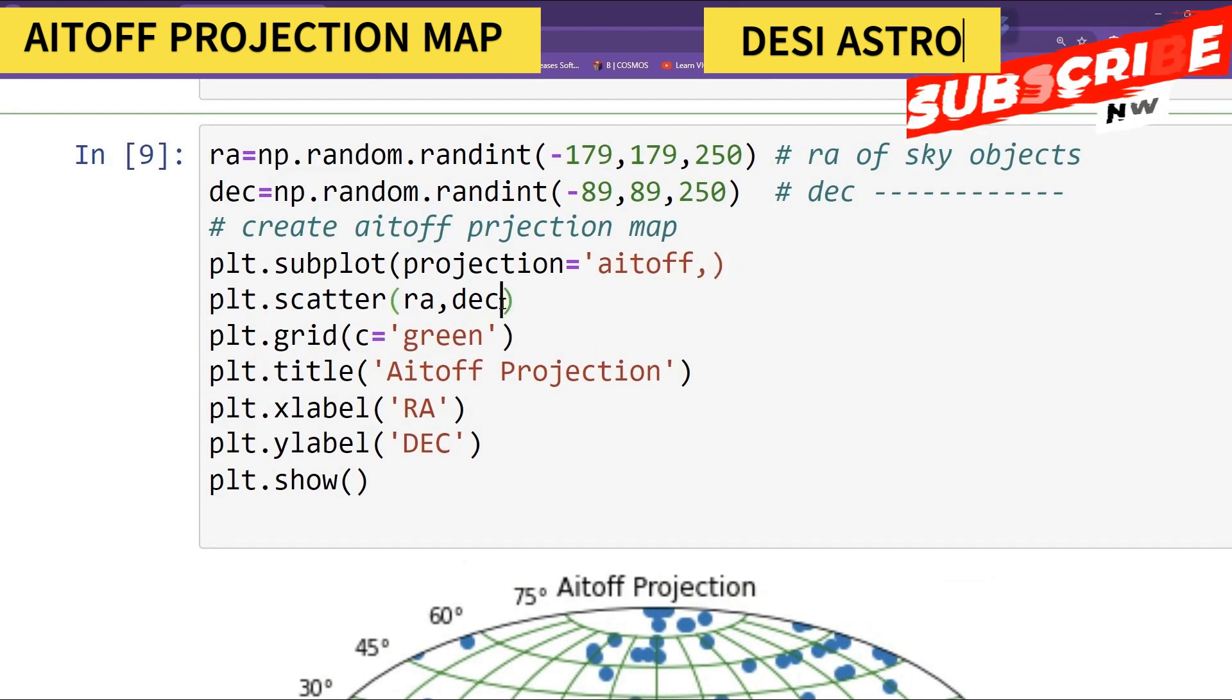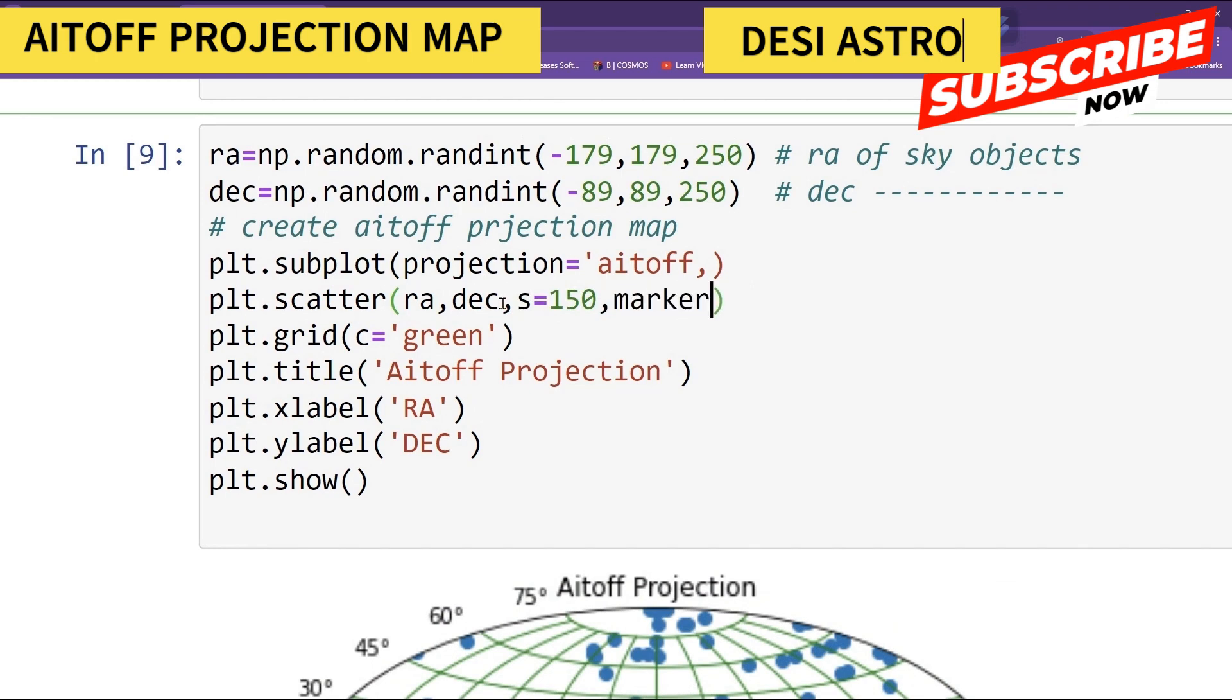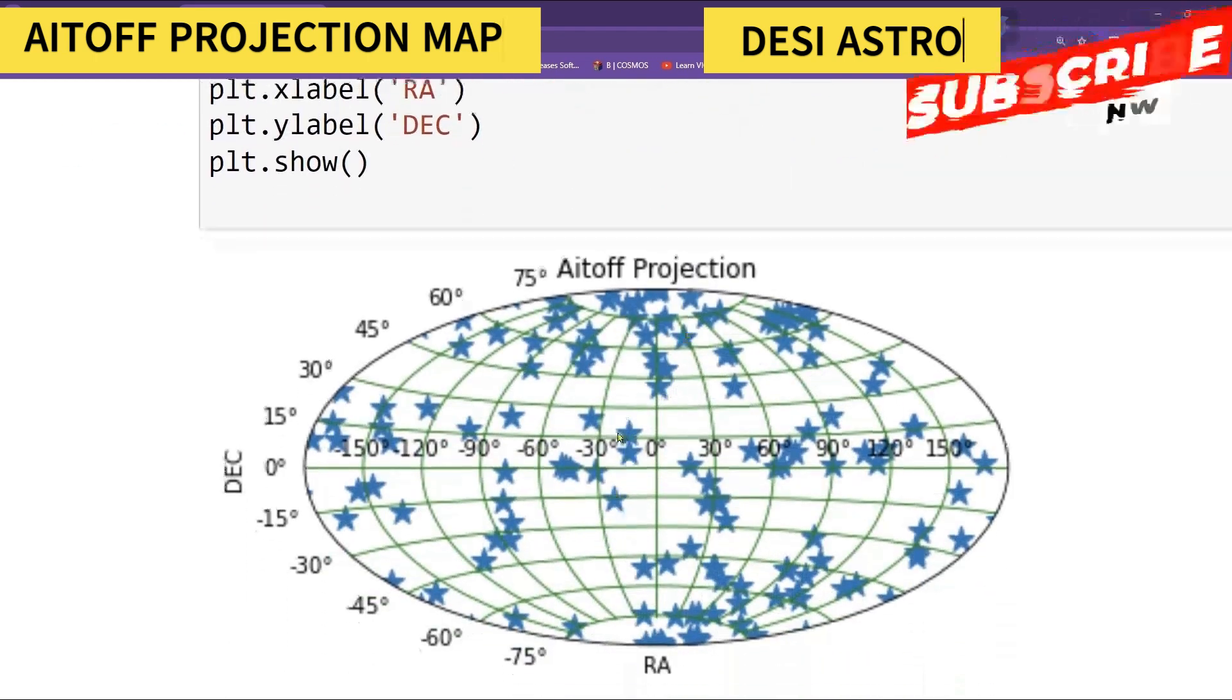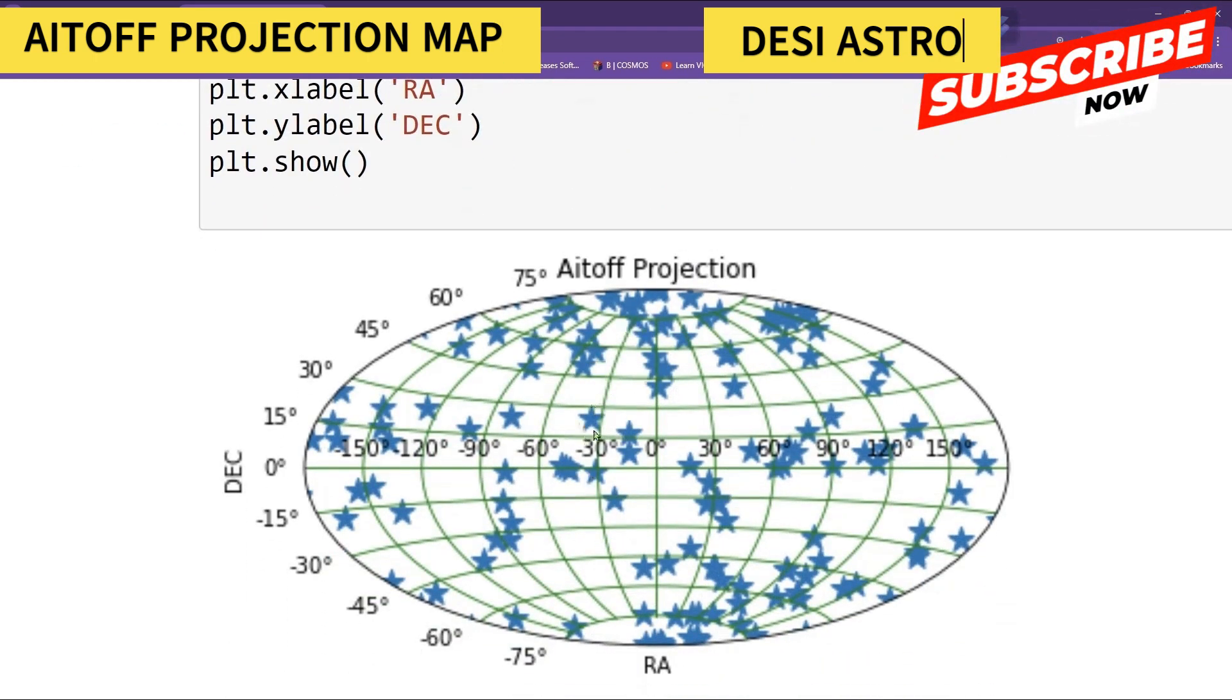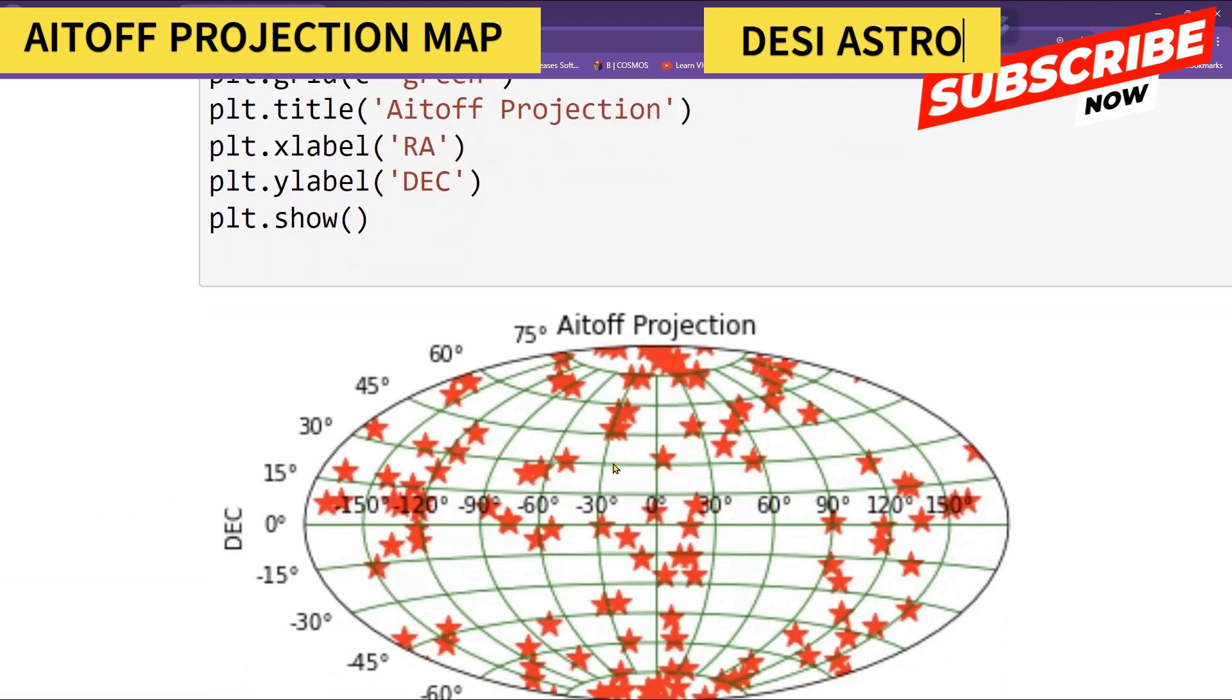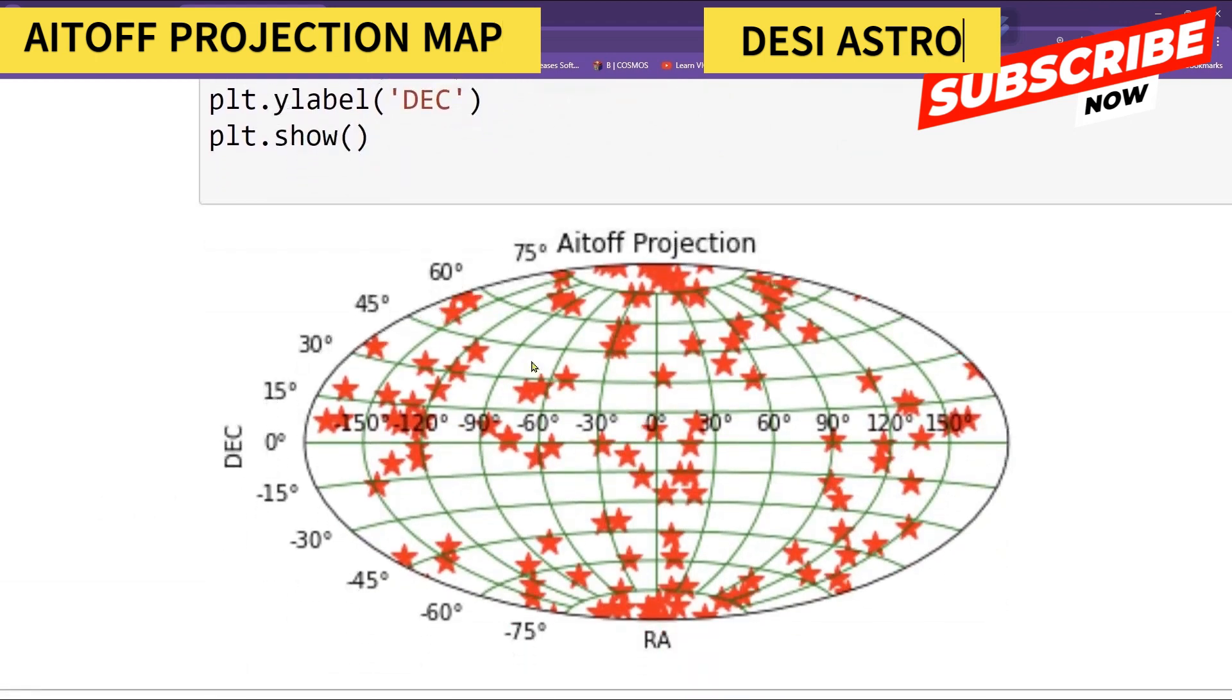You can also change the size if you want. So size you can make it say 150, and you can give marker equal to star. So you can see objects are marked with the star. You can also give different colors. Color you can make it red. So here you can see basically it is that where your object in the sky appears.